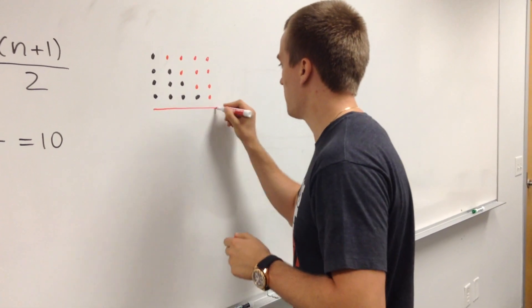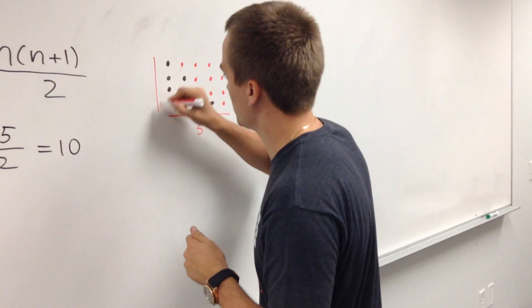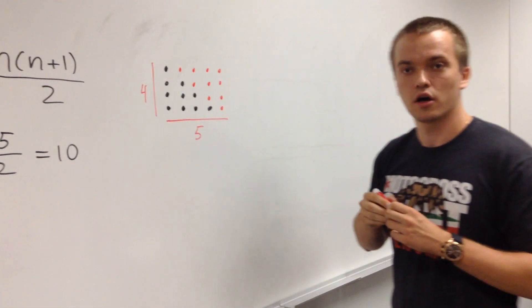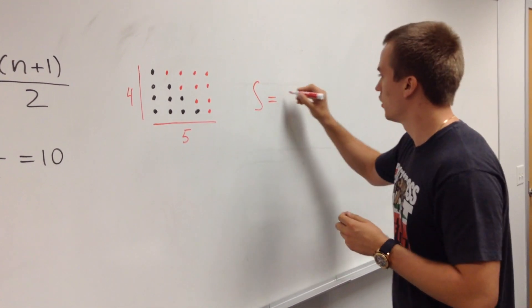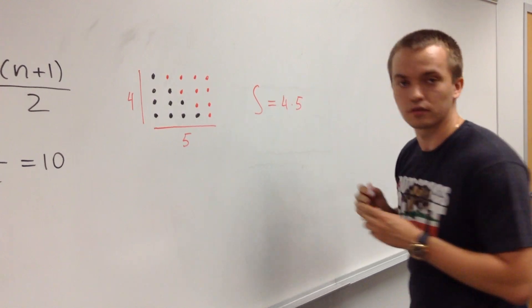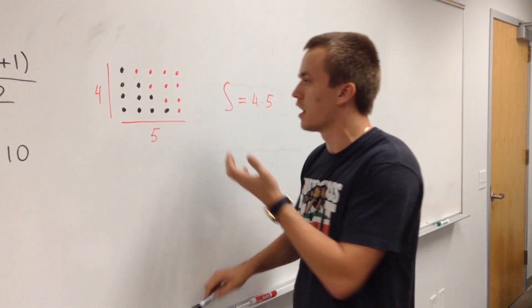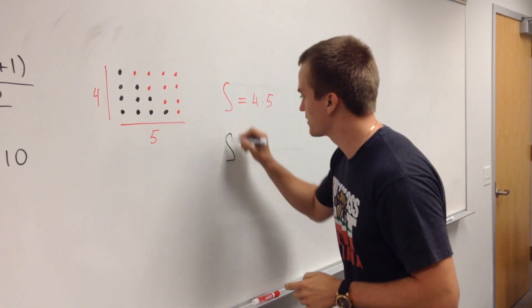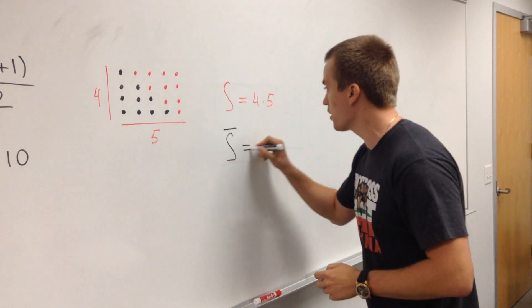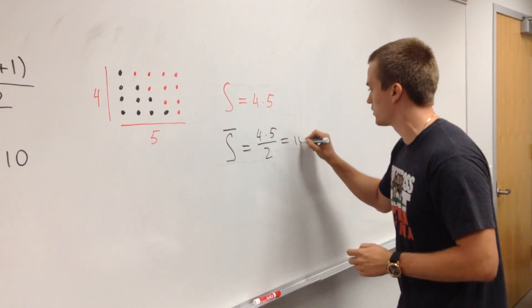And what I'm going to do, I'm going to find how many points I have here. So my base consists of 5 points, and my height consists of 4. So let's say my sum is equal 4 times 5. So I have 4 times 5 points. But what I'm interested in, I'm interested to have just a half of these points. So instead of this sum, I will find S bar. So S bar can be equal 4 times 5 over 2 and it's equal to 10. Do you see? 10, 10.